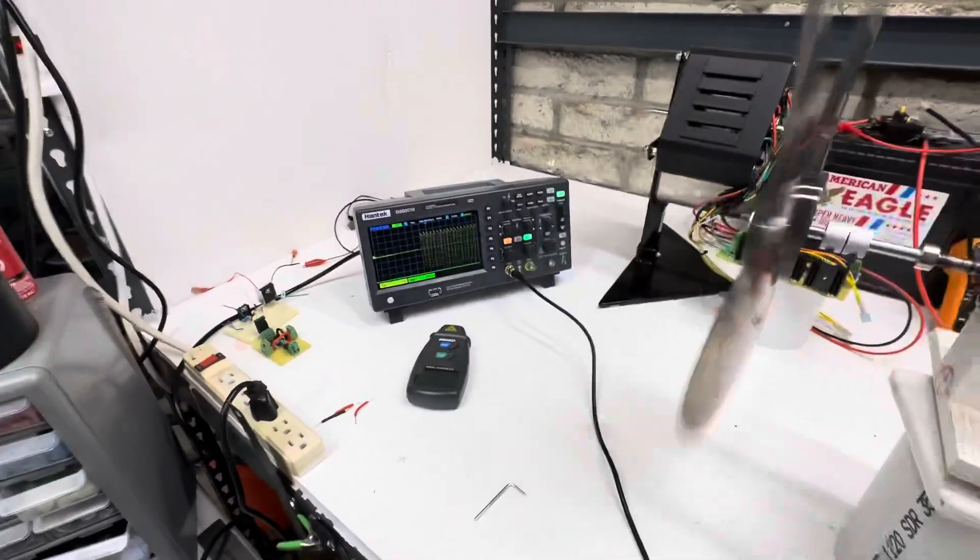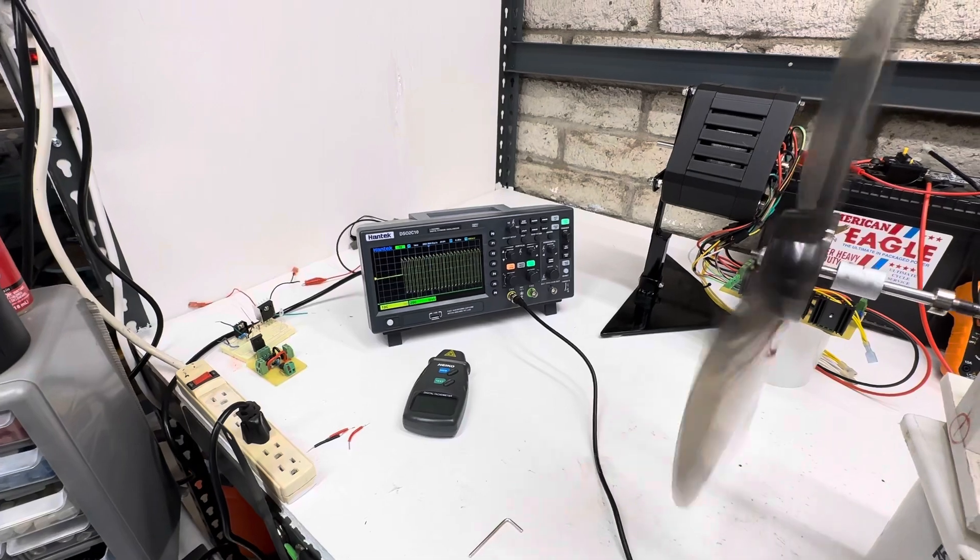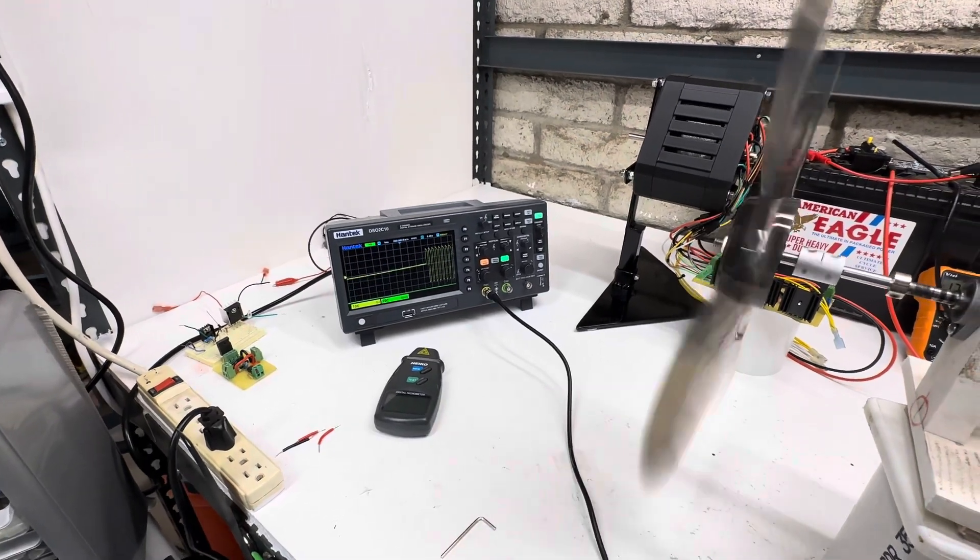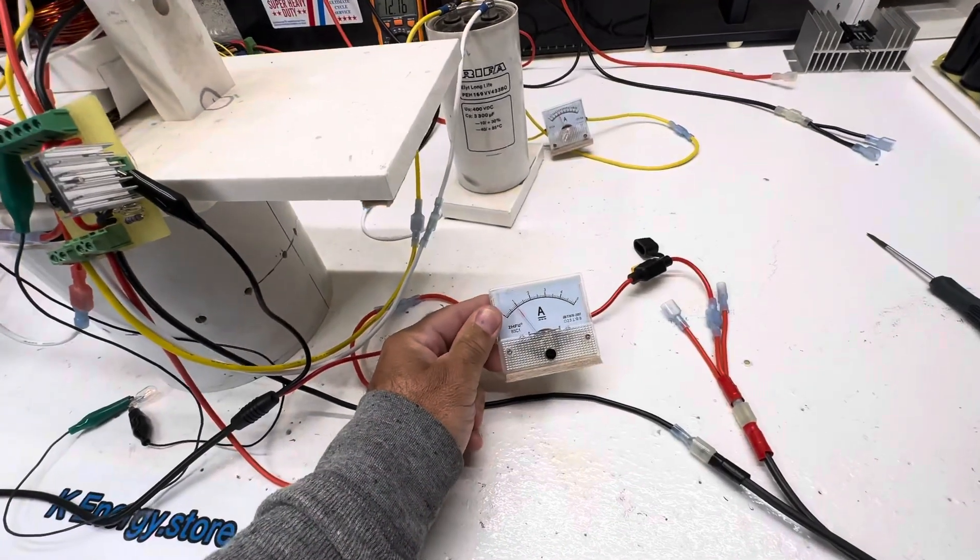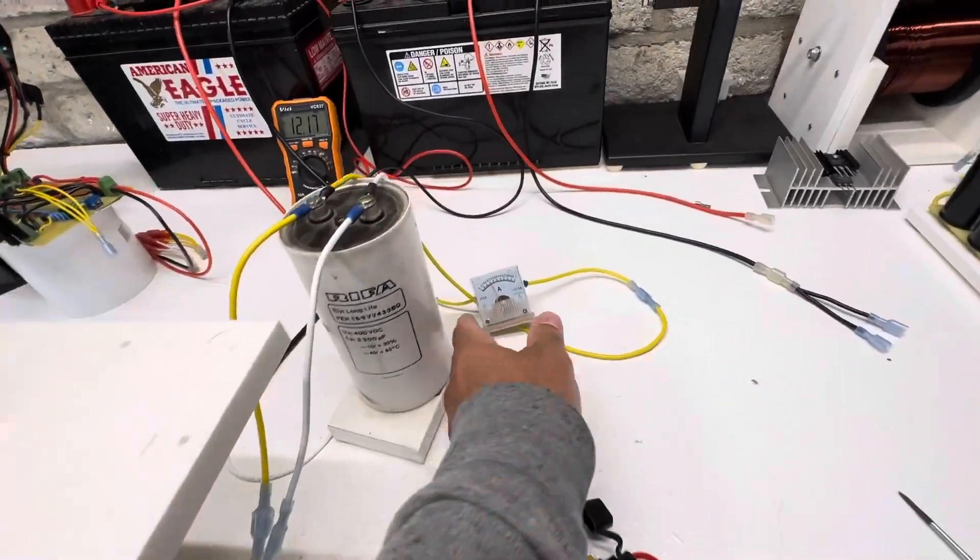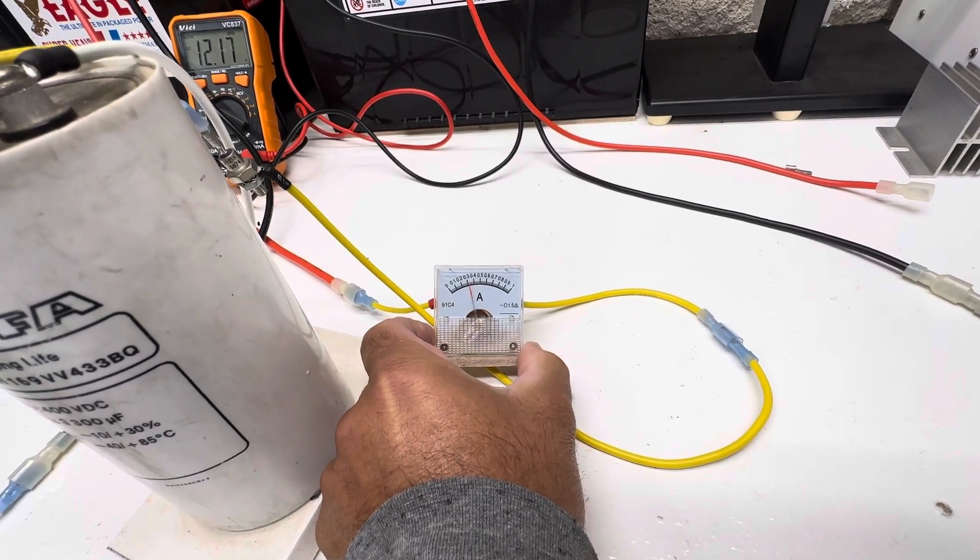Right away you can hear the sound difference, and you can see it's basically oscillating in between each magnet there. We're using one amp out of the battery, and now you can see we're using 300 milliamps, just a little over 300.